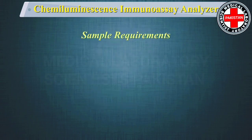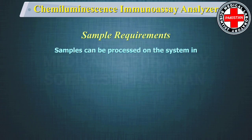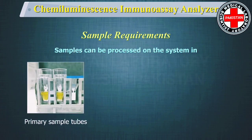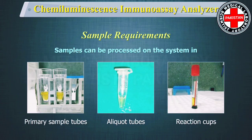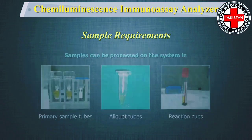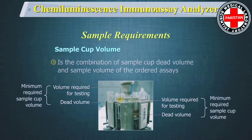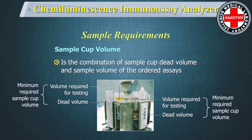Samples can be processed on the system in primary sample tubes, aliquot tubes, or reaction cups. Adequate sample volume is important to get reliable assay results. Sample cup volume is the combination of sample cup dead volume and sample volume of the ordered assays, which is usually specified by the reagent manufacturer on the package insert or reagent application sheet.